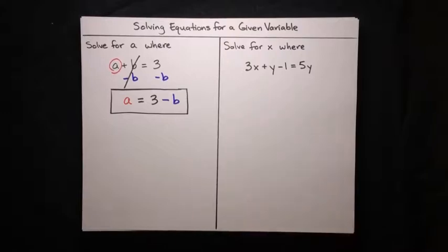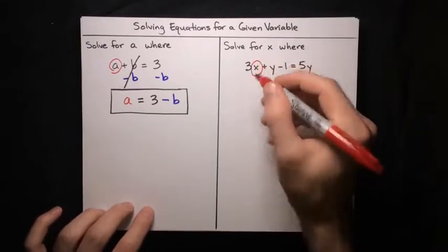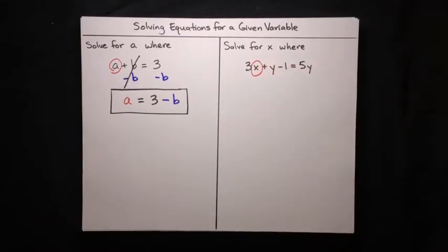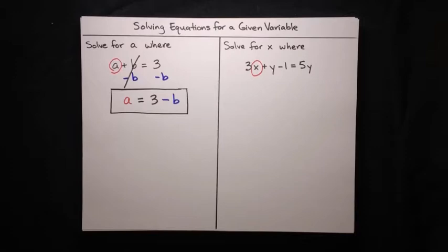Next up, we want to solve for x, where 3x plus y minus 1 equals 5y. So let's go ahead and circle x in our equation, because that's our primary variable. We want to isolate x, and to do that, we'll just think of the other variable, y, like any other number. So first let's focus on isolating the 3x term — we'll get rid of the 3 later. First, let's focus on getting the y minus 1 away from the left hand side.